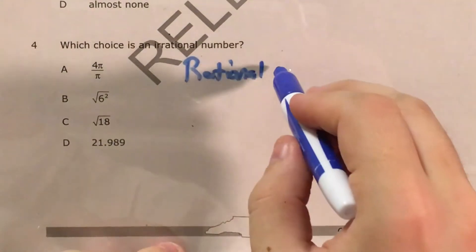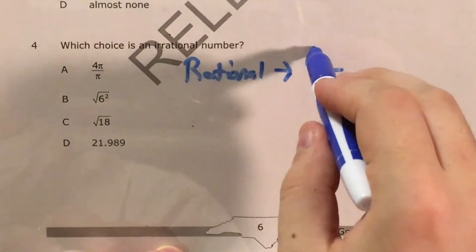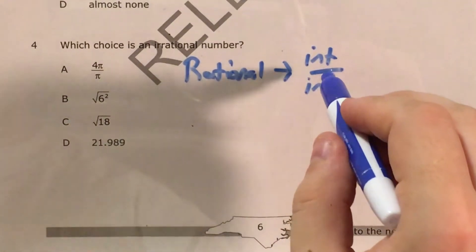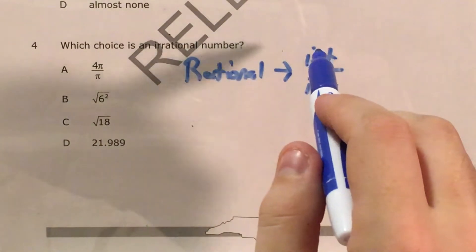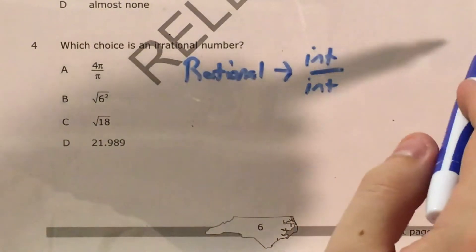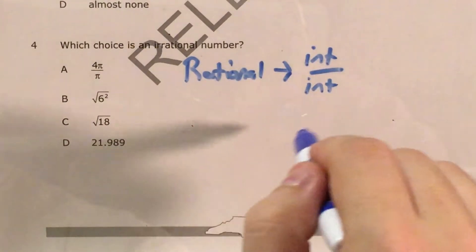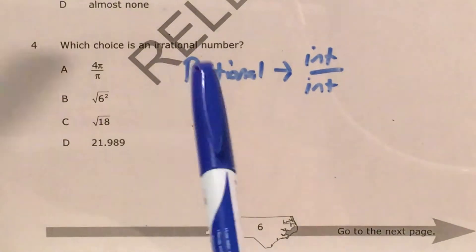A rational number can be written as a fraction with some integer in the numerator or the denominator. If you remember, an integer is just a positive or negative whole number, so 0, 1, 2, 3, 4, 5, and so on, and then negative 1, negative 2, negative 3, negative 4, and so on. If I can make a fraction with any integers in the numerator and denominator, and it can come out to equal the number that I'm looking for, then it's rational.